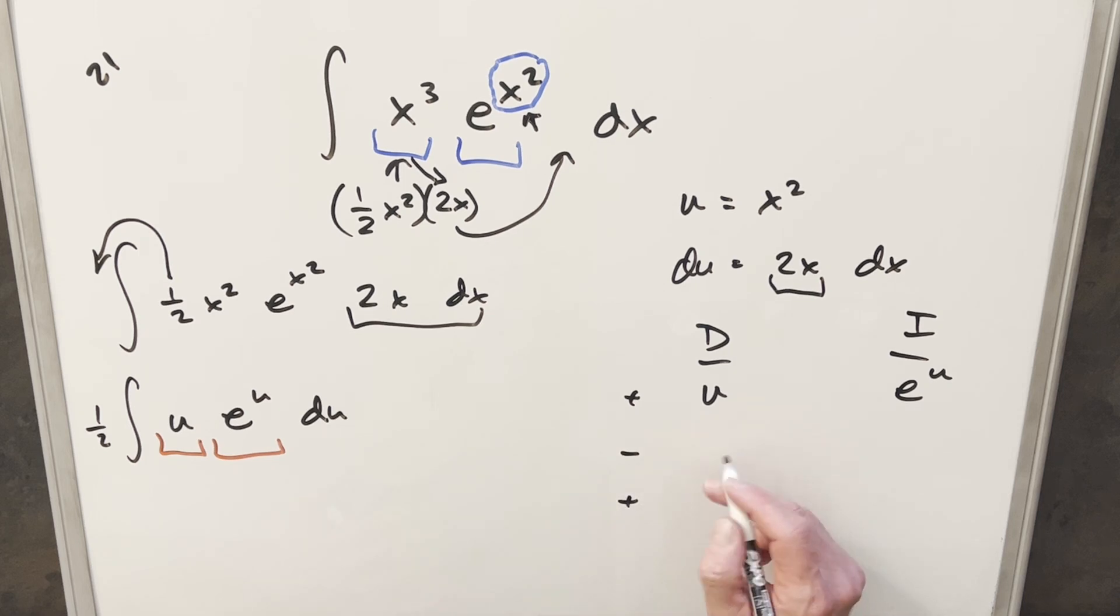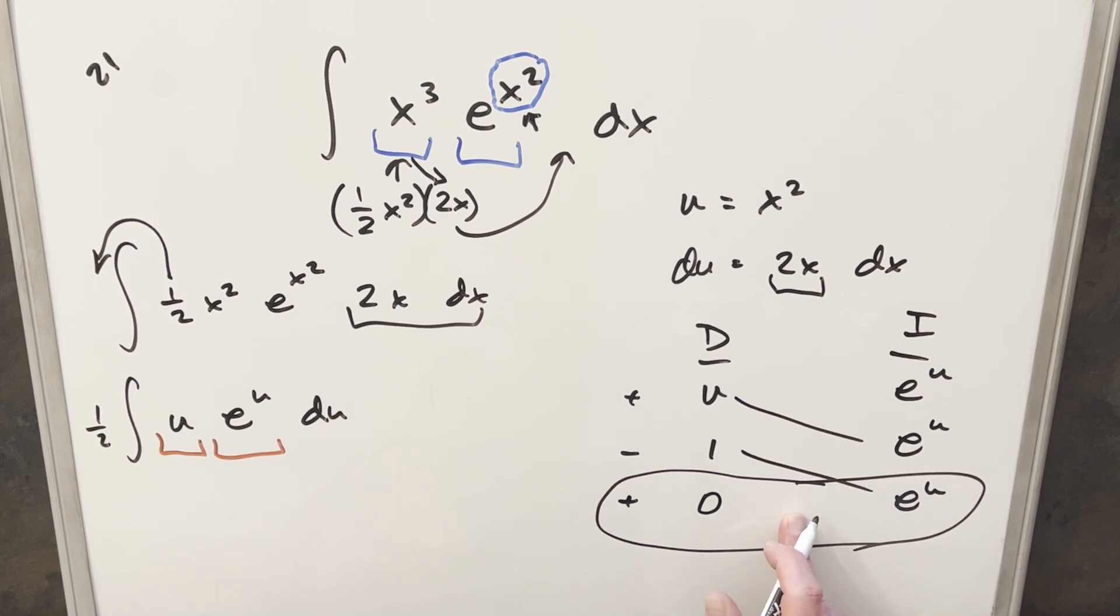So when we differentiate down this list, if we differentiate u, first we get 1, differentiate again, and we get 0. Integral of e to the u is going to be e to the u, and then we just do it again. And then we'll have our solution here on the diagonals, not worrying about the last row, because we've got 0 there. So we don't have anything to integrate here.